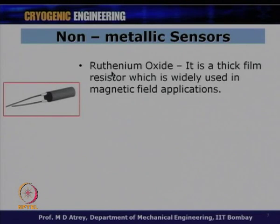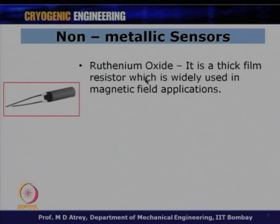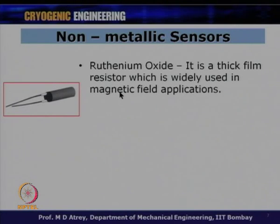Ruthenium oxide is preferred whenever there is a high magnetic field environment. There are also other sensors using germanium, gallium, aluminum, arsenide, and similar dopants. But the most commonly used sensors are silicon diodes and Cernox.